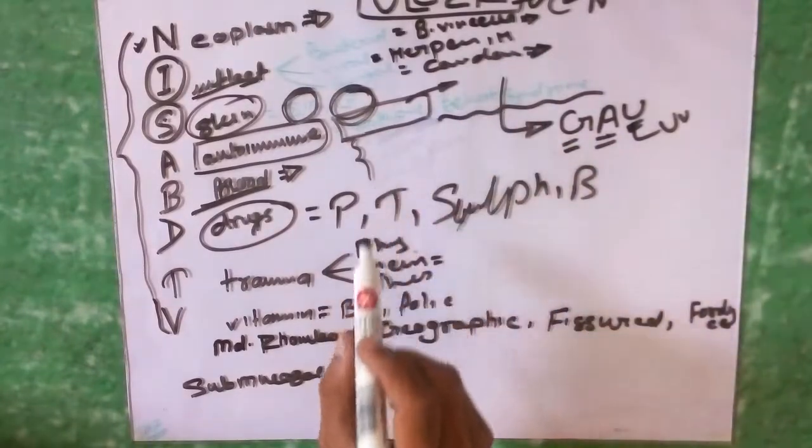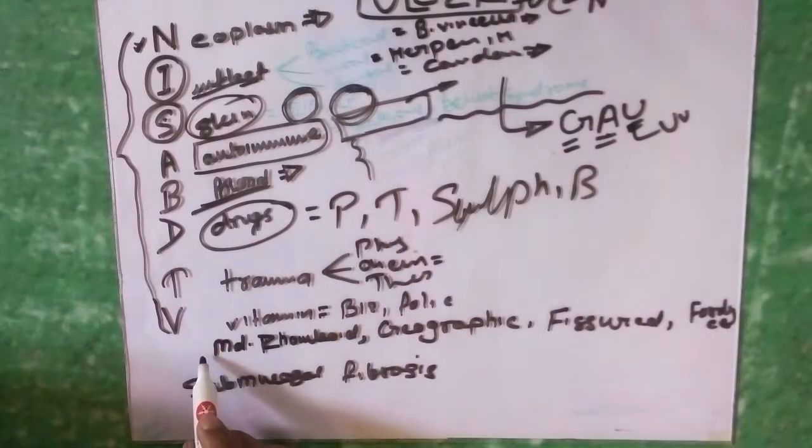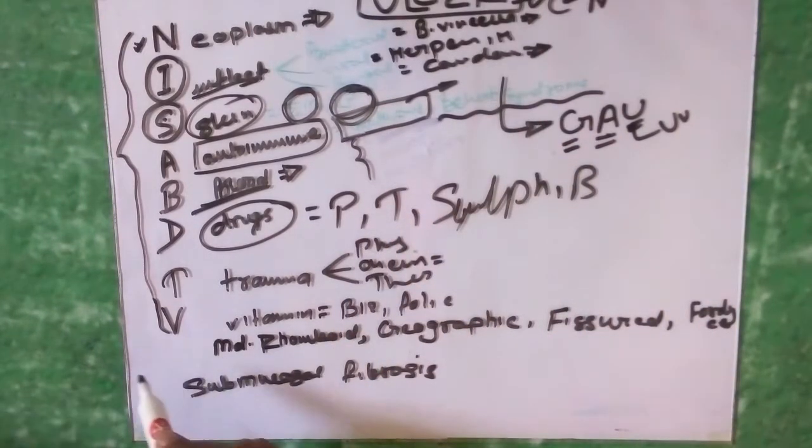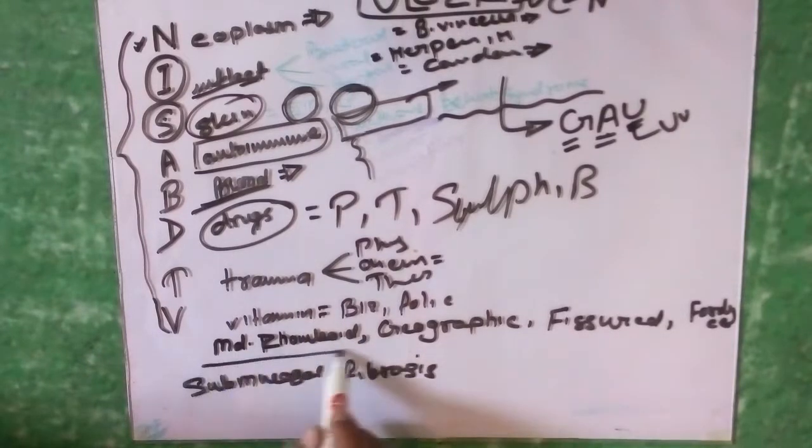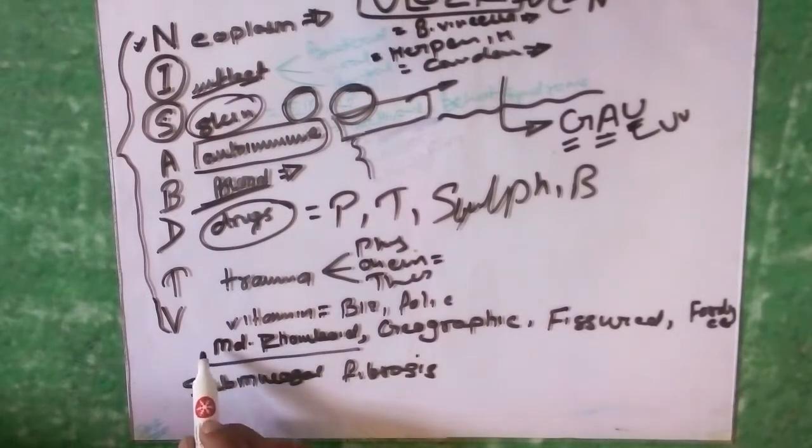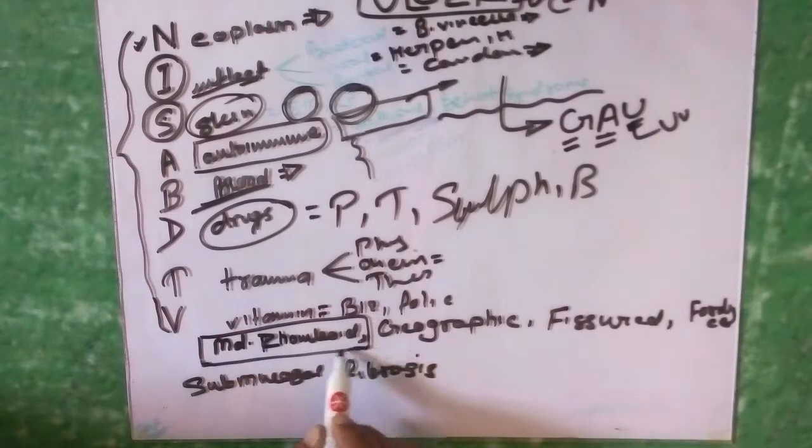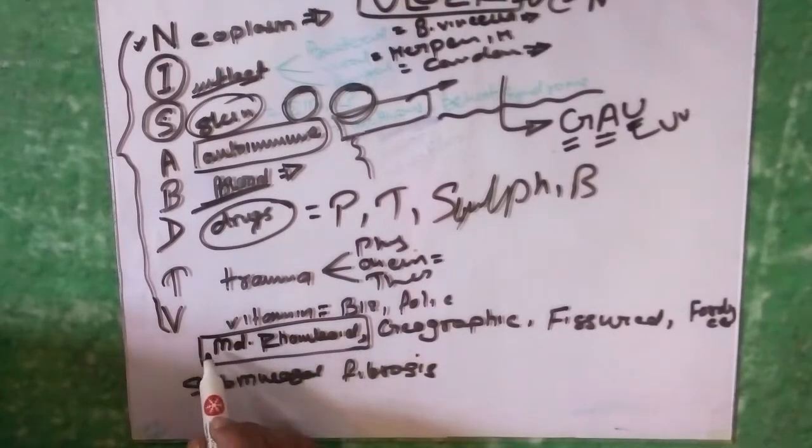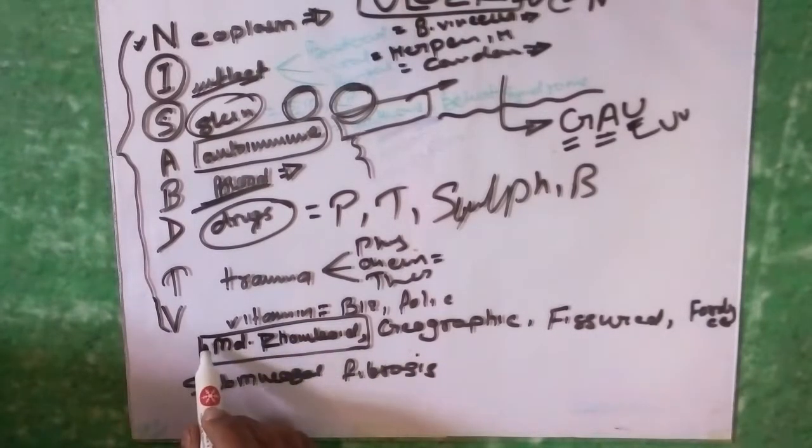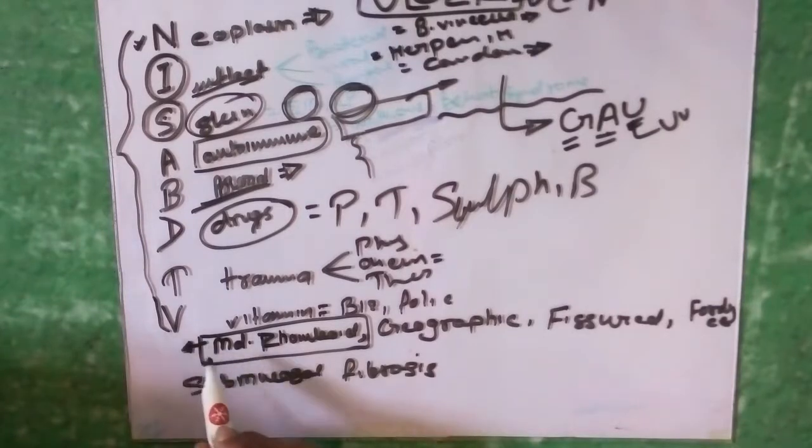Now small topics are remaining. What is median rhomboid tongue? It is due to developmental anomaly, due to persistence of the tuberculum impar which was involved in the development of the anterior two-thirds of the tongue.